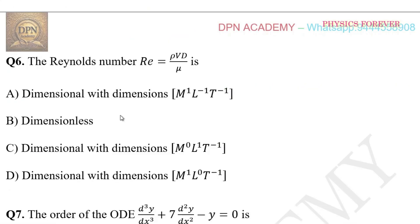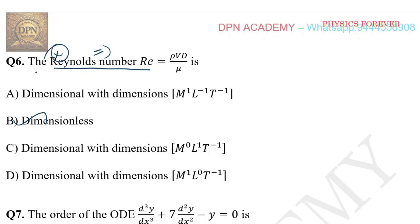Question number 6: The Reynolds number R equals a certain expression. What is its dimensional value? The correct option is that it is dimensionless. Reynolds number is dimensionless, so its dimension is zero. Sometimes there are questions asked like this.